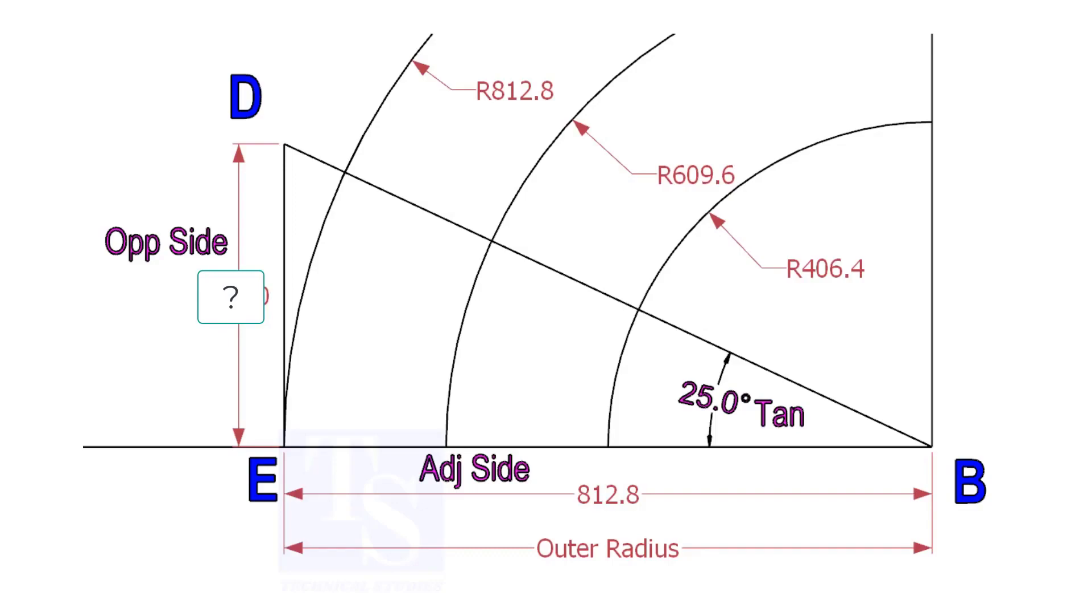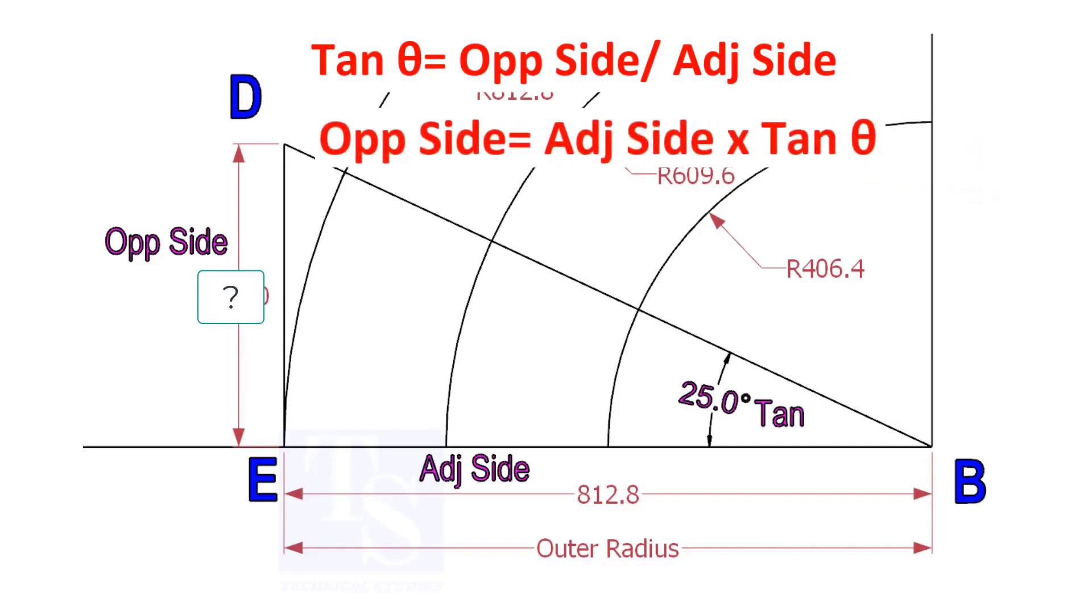To draw the line DB, we need to know the length of the line ED. To calculate ED, we need to apply the formula: tan theta equals opposite side divided by adjacent side. Opposite side equals adjacent side multiplied by tan theta.